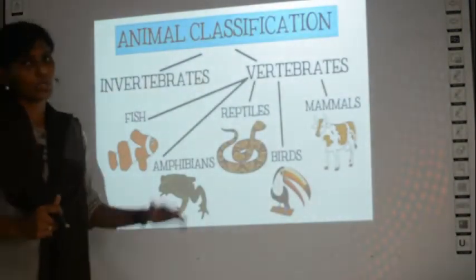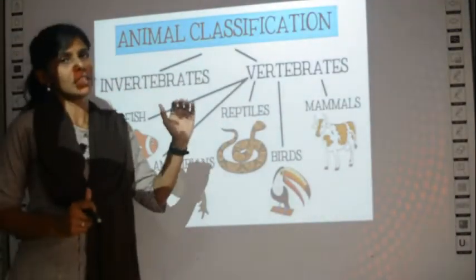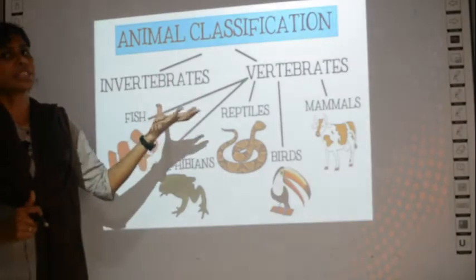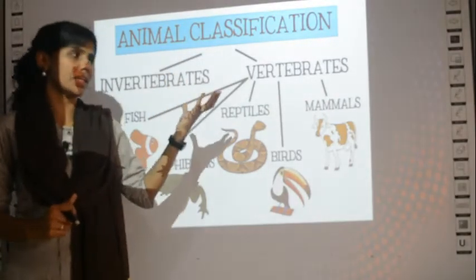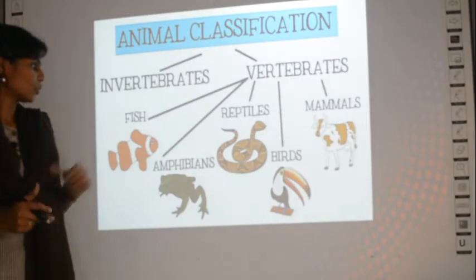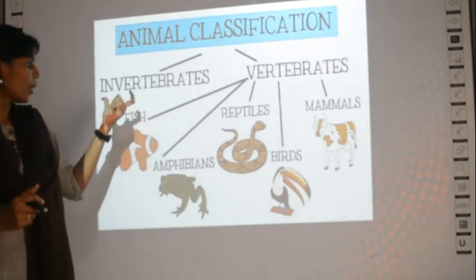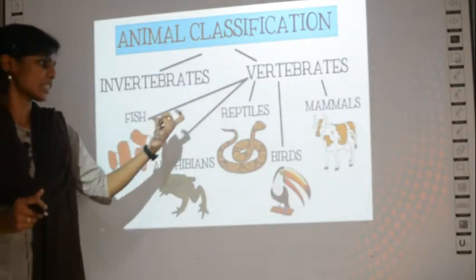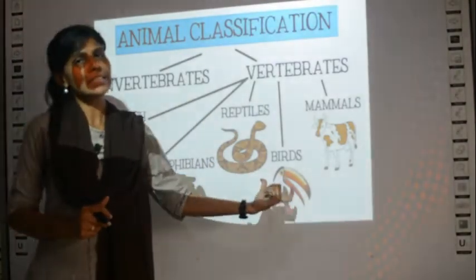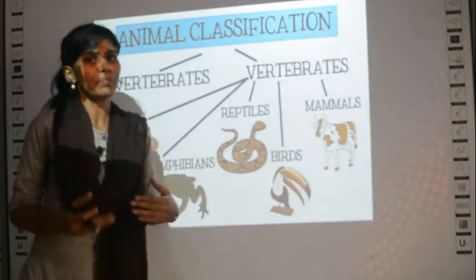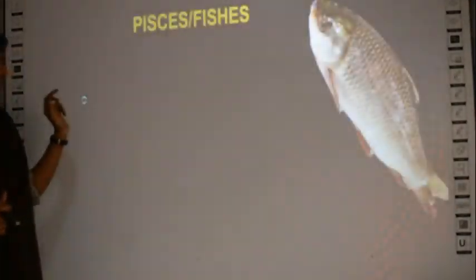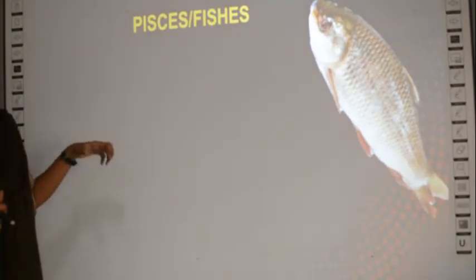That was the revision of invertebrates. The next classification is the group Vertebrata. Vertebrates have five subgroups called fishes, amphibians, reptiles, birds, and mammals. We will quickly look into the properties of these five groups.